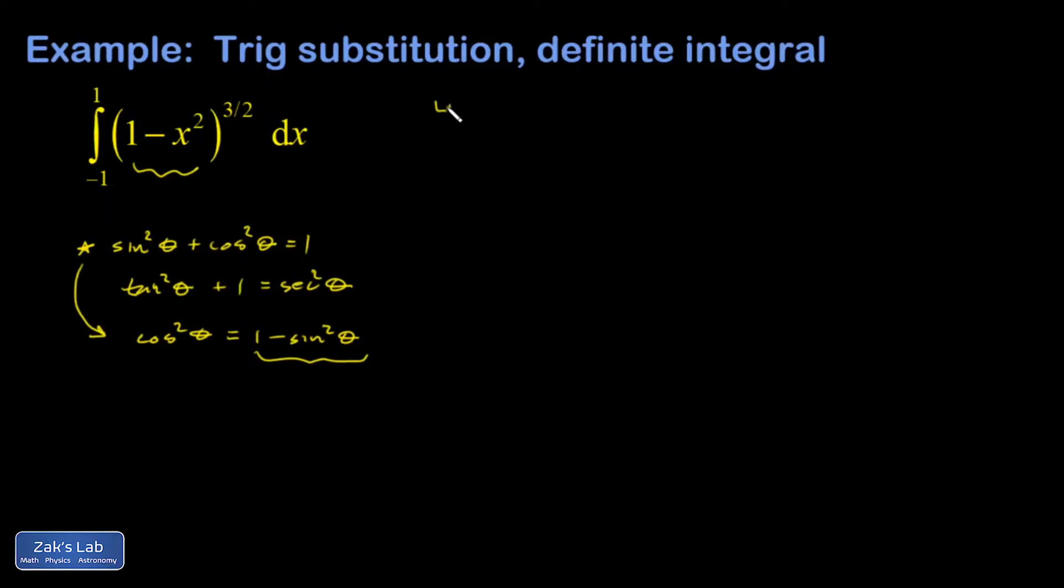I'm going to say let x equal sine theta. Then 1 minus x squared, that's just going to be 1 minus sine squared, which simplifies to cosine squared, and then I can apply this fractional power. I also have to transform the differential, that's cosine theta d theta.